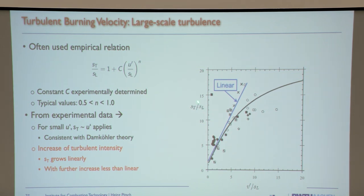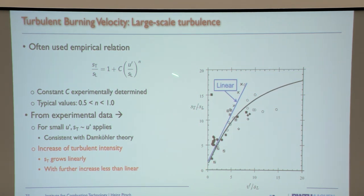This plot shows s_T as a function of u'. The linear line is what we just derived: s_T is proportional to u'. This is a model that's often used, where people say s_T is u' to the nth power, where n is something that varies.